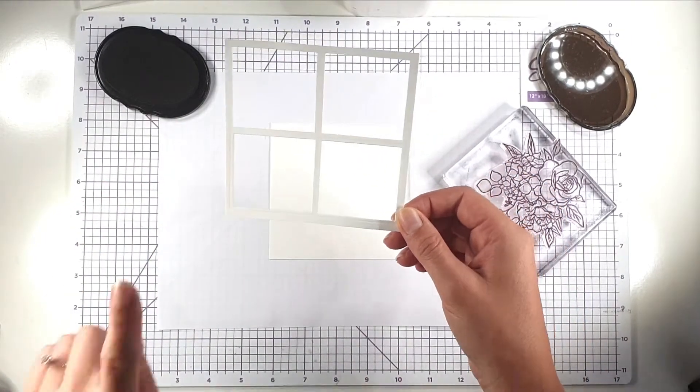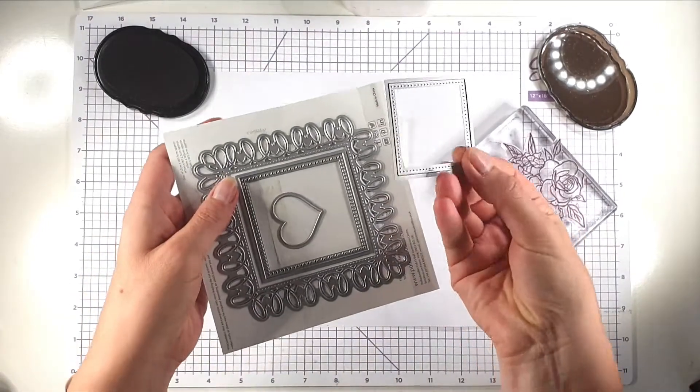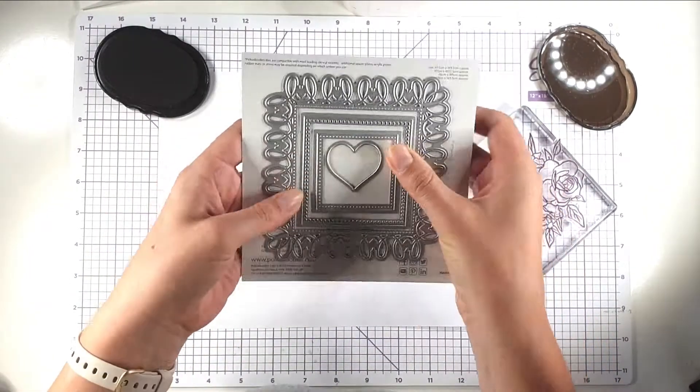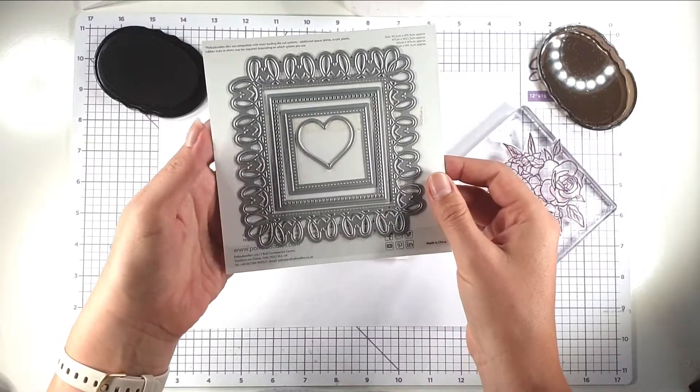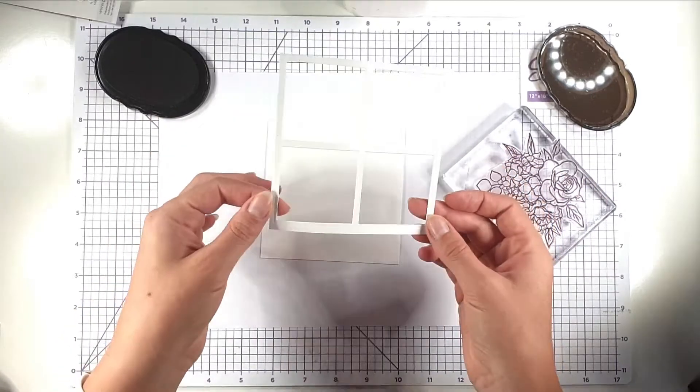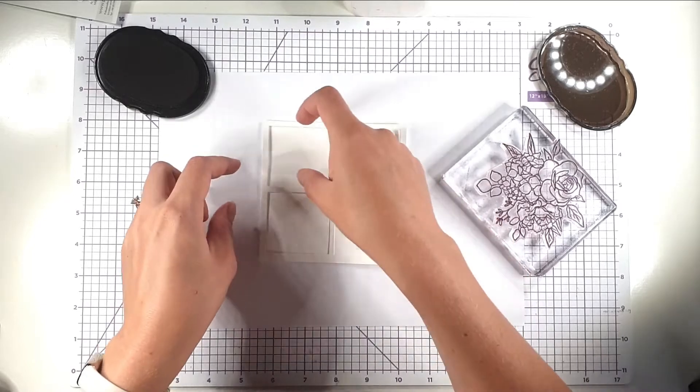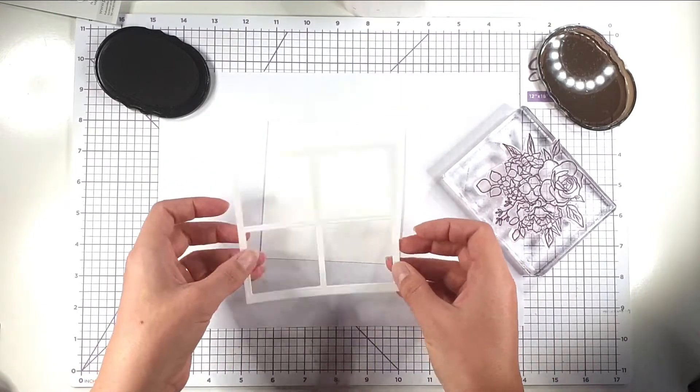I've cut some windows out of this, so I've used this die here from this Squary Swirly Hearts die set from Polka Doodles, but any two inch square die would do and I've just cut that out four times to create a window frame.